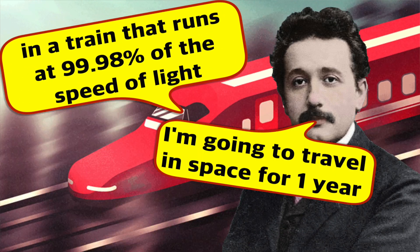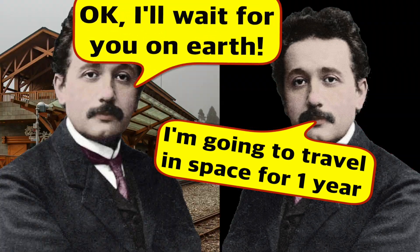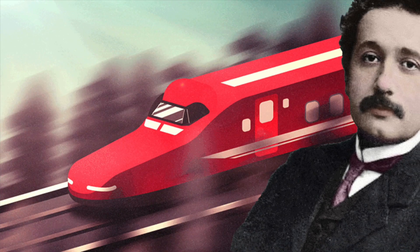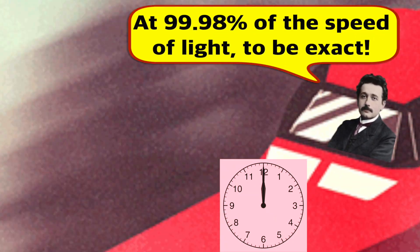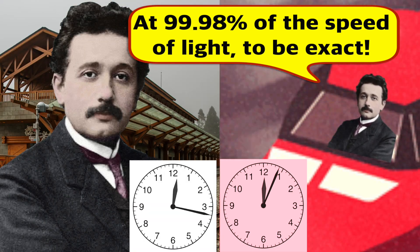The second brother says okay, I'll wait for you at this platform, and they say goodbye to each other. Now the brother who is on this train travels at the speed of light. His watch ticks time much, much slower compared to the watch of the brother who stays on Earth.